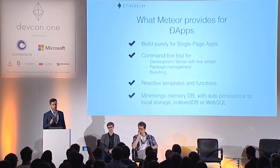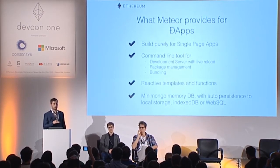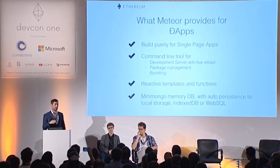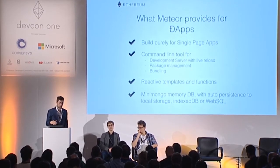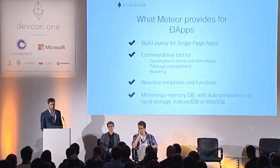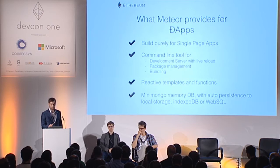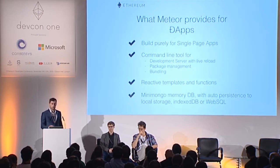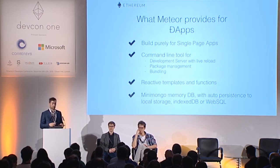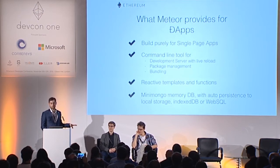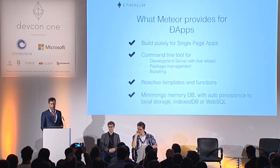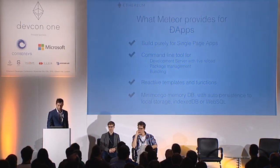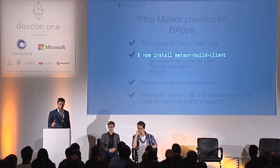A major point is Meteor has mini-mongo, which is an in-memory database with basically the same syntax as MongoDB, but it lives in your browser's memory. There are packages like my package called persistent mini-mongo which auto-persists all of this into localStorage or IndexedDB or Web SQL. So you're just talking to this Mongo-like database, writing things that are automatically persisted in local storage, and when you reload the application it's just back there.